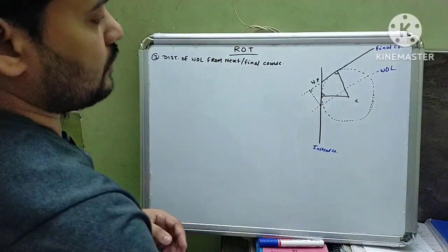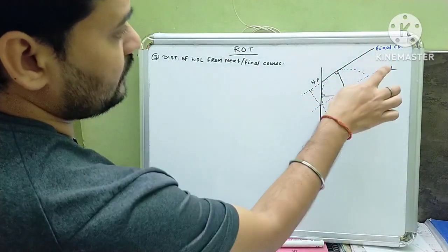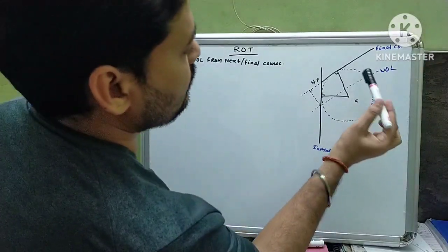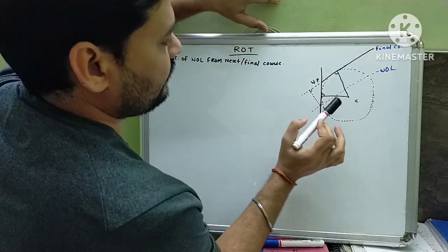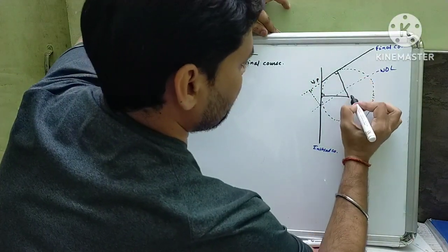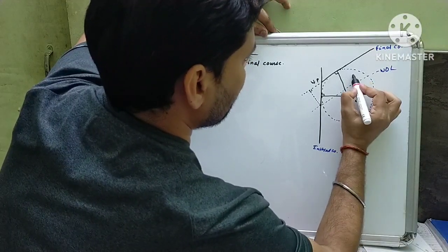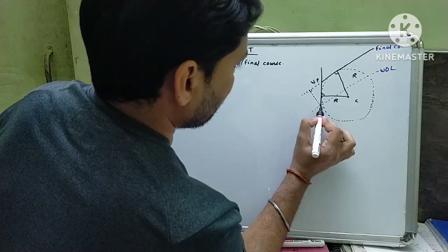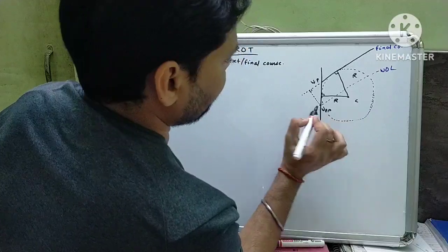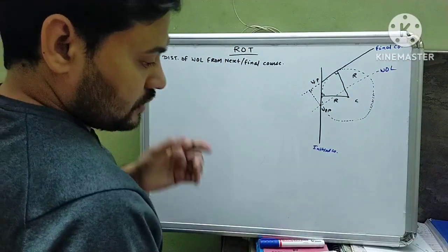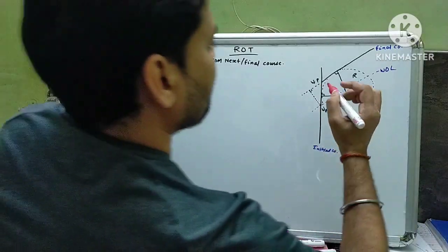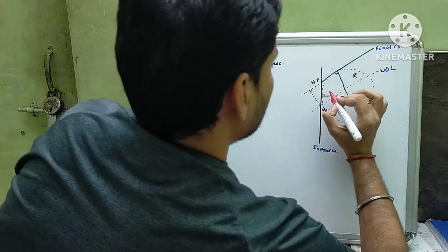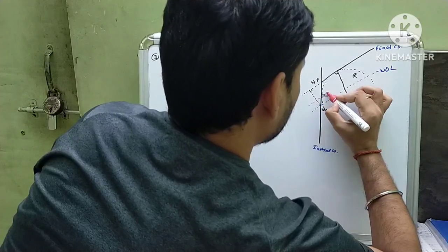In this video we are going to discuss the perpendicular distance of the final course from the wheel over line — or the distance of the wheel over line from the next or final course. I have drawn a circle here; this is our initial course and this is the final course. This is r, this is the center of the circle, and this is the radius. The wheel over point and wheel over line are marked. To derive this, we draw one more line parallel to the final course or wheel over line, passing through the tangent point.